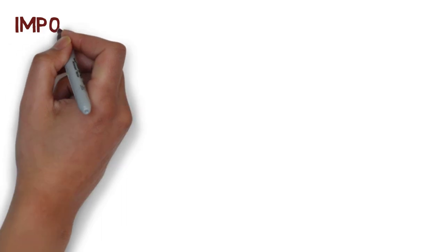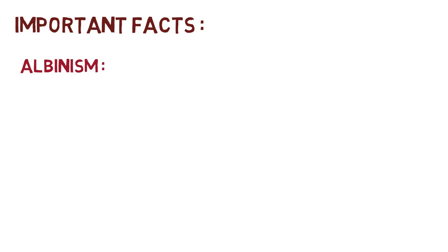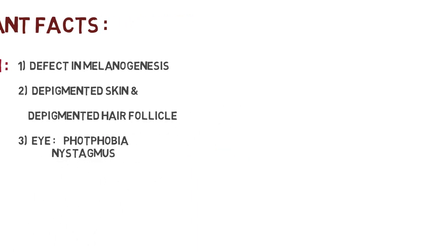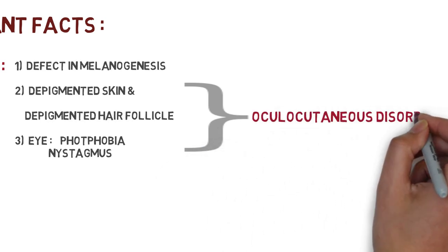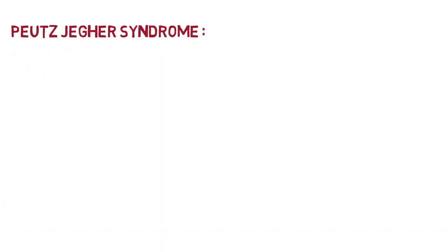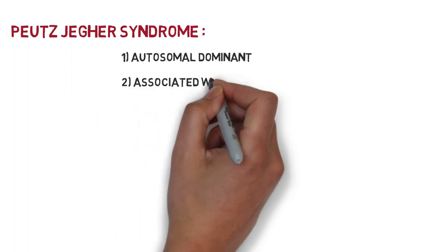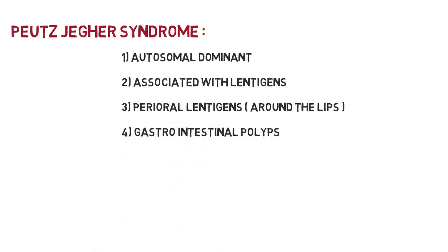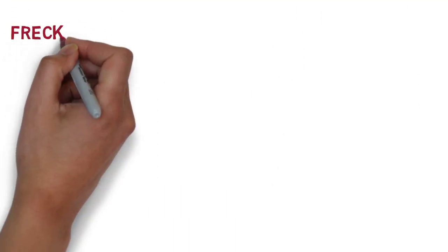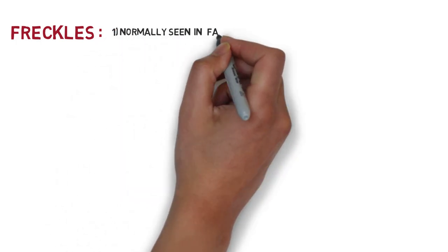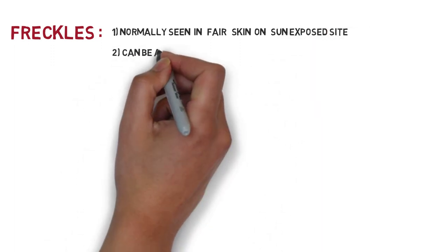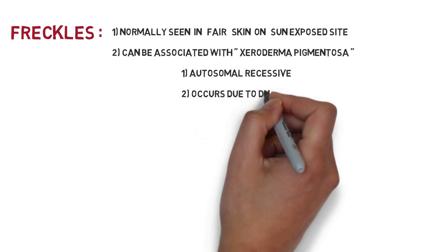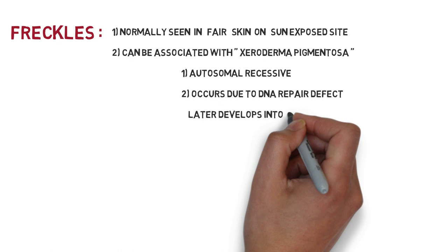Important facts about albinism: there is a defect in melanogenesis, so the skin loses its color. You can see depigmented skin and depigmented hair follicles. In the eye, you can see nystagmus and photophobia, which is referred to as an oculocutaneous disorder. Peutz-Jeghers syndrome is autosomal dominant and associated with lentigines — you can see perioral pigmentation (around the lips) and gastrointestinal polyps. Freckles are normally seen on fair skin on sun-exposed sides and can be associated with xeroderma pigmentosa, which is autosomal recessive, occurs due to a DNA repair defect, and can later develop into squamous cell carcinoma. Freckles appear on sun-exposed areas like the face, hands, and other extremities.